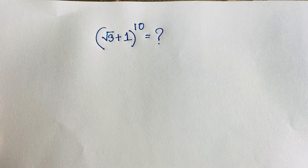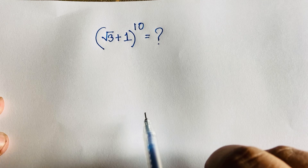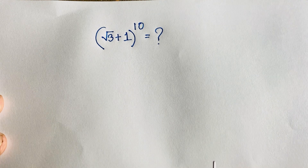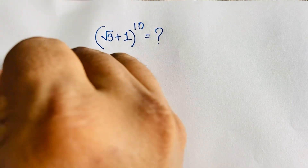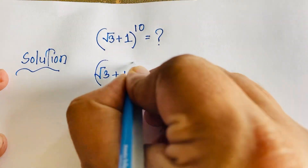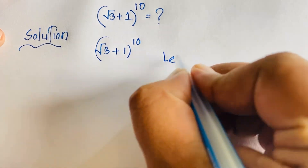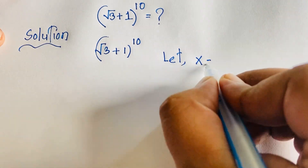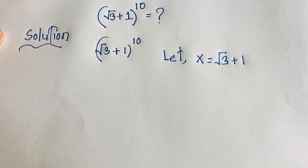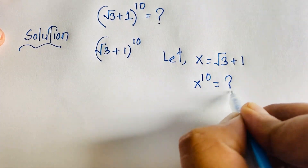Hello everyone. In this video we have solved this interesting math question. The question is: (√3 + 1) whole to the power 10 — what does this equal? How do we evaluate this radical expression? We let x equal to √3 + 1, so we are looking for x to the power 10.